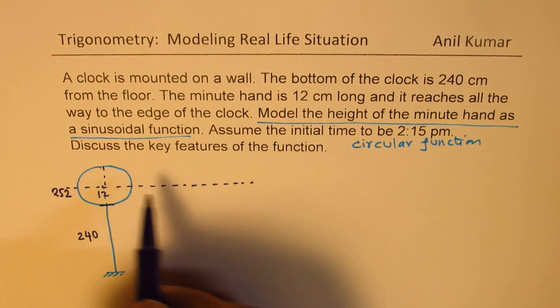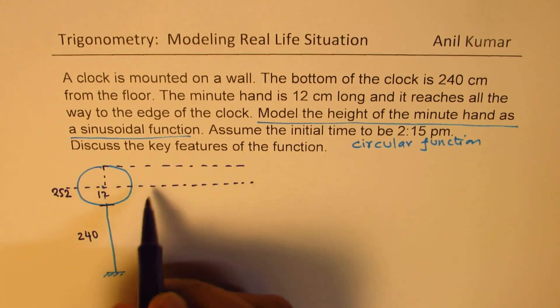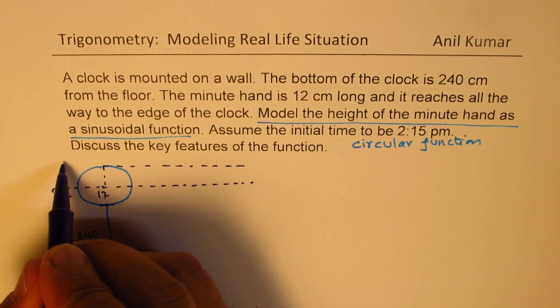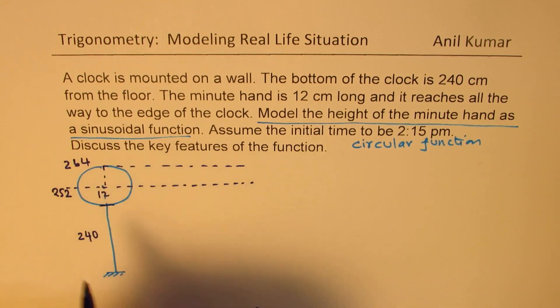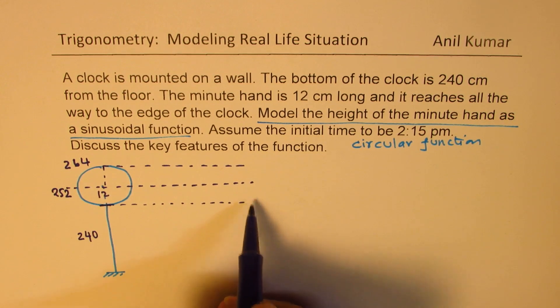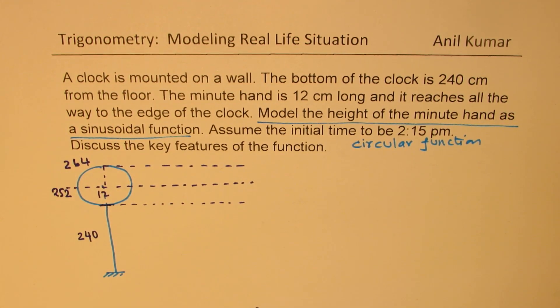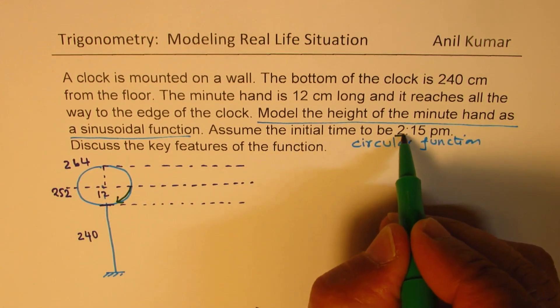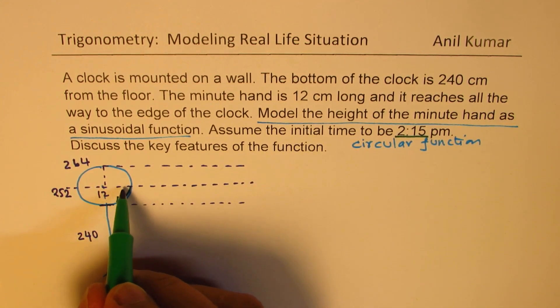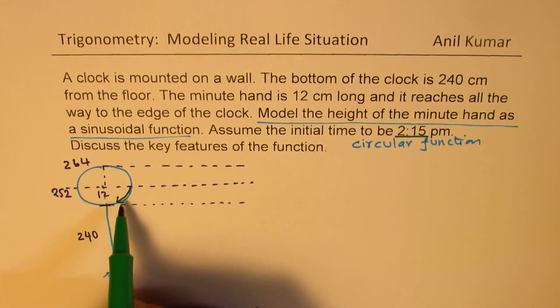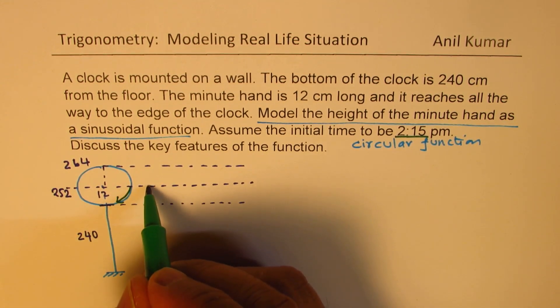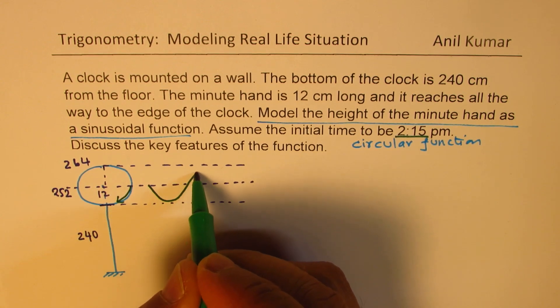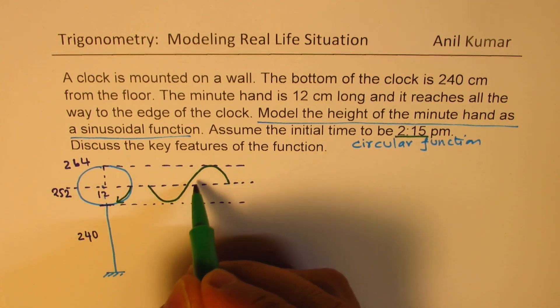The maximum will be 12 more, which will be at 264. Minimum will be 240. Now, as the minutes arm moves in this direction, it starts at 2:15, which is right there. So, we are checking the minutes arm. It goes down and then comes back. So, basically, we could represent this like a sinusoidal wave. It goes down and then comes back. That is one full circle.